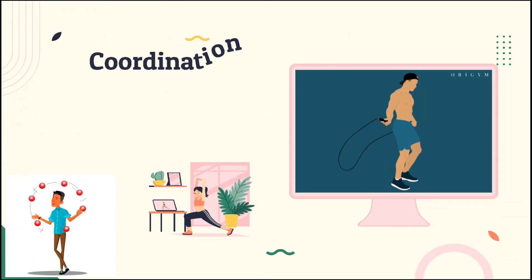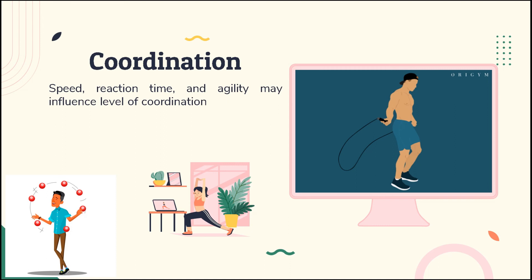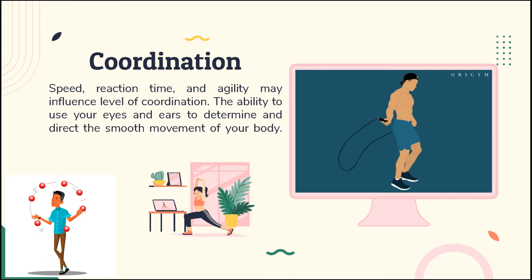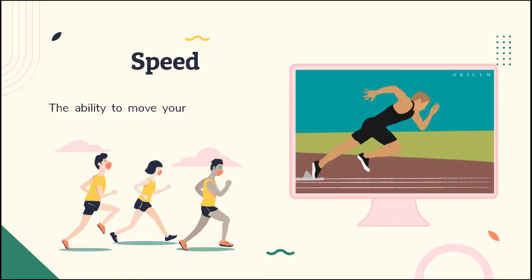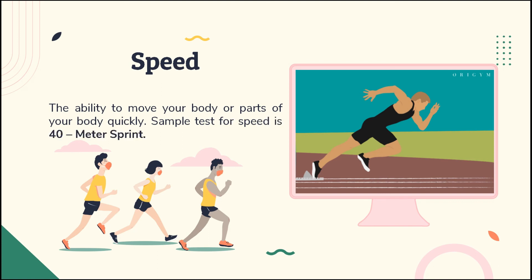Coordination is the ability to use your eyes and ears to determine and direct the smooth movement of your body. Speed, reaction time, and agility may influence your level of coordination. A sample test for coordination is paper juggling. Speed is the ability to move your body or parts of your body quickly. A sample test for speed is the 40-meter sprint.